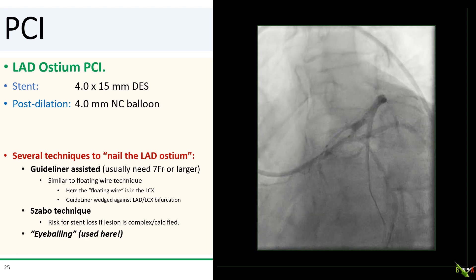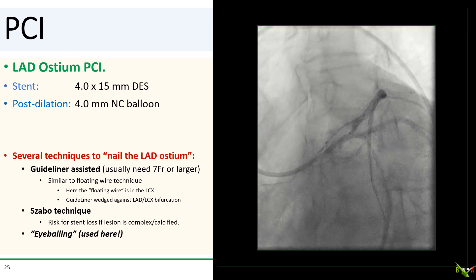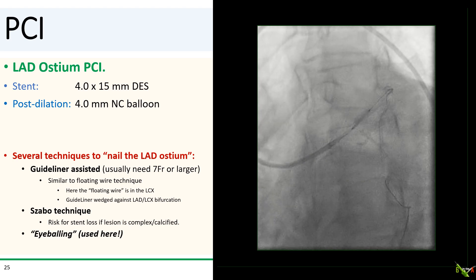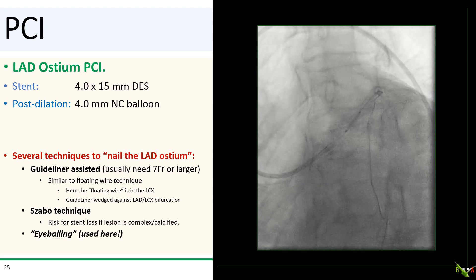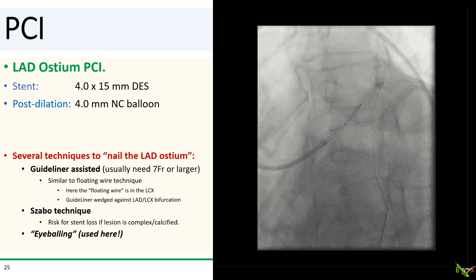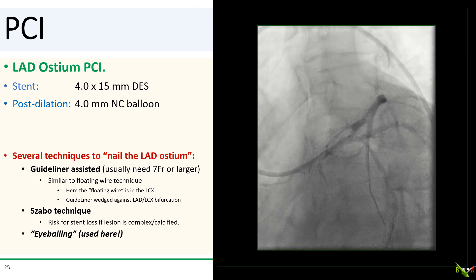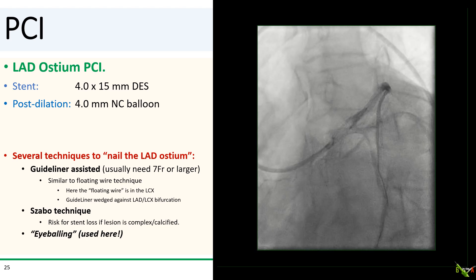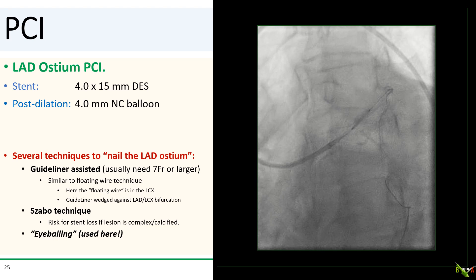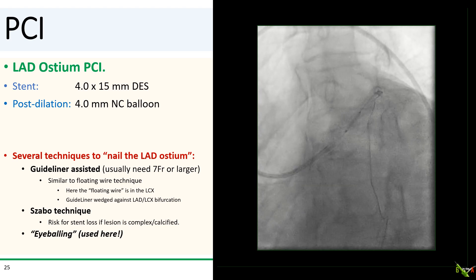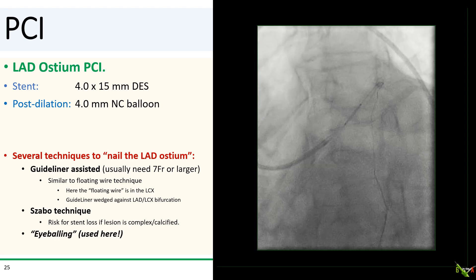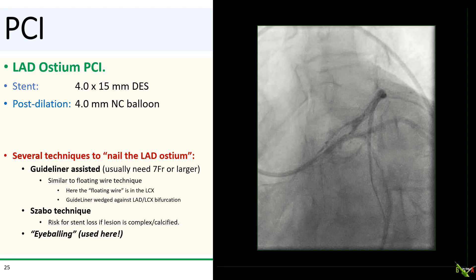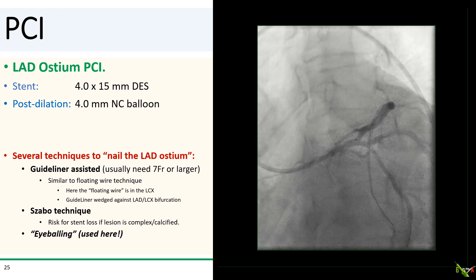There are several techniques to nail the LAD ostium. The simplest is probably the guideline-assist technique, but you'll generally need a 7 French or larger guideliner. It's very similar to the floating wire technique for aorto-ostial lesions — the floating wire is in the circ, and with wires in both the LAD and circ, you advance your guideliner until it is mechanically wedged at the LAD-circumflex bifurcation, then place the proximal marker of your stent at the tip of the guideliner. A second technique is the ZABU technique, which I only recommend for relatively simple non-calcified lesions — otherwise you risk stent loss. Third is eyeballing, the most common technique, and that's what we used here.